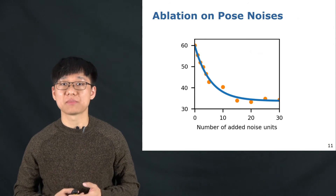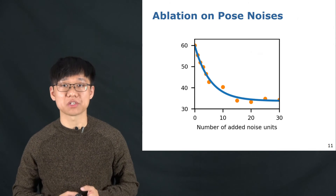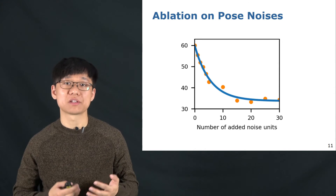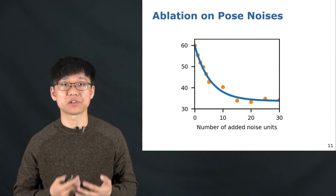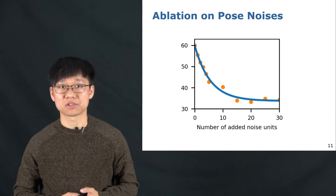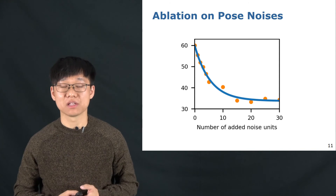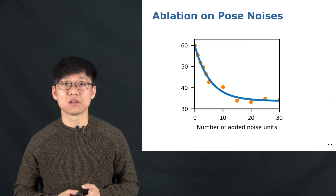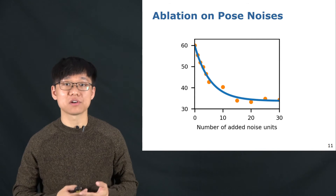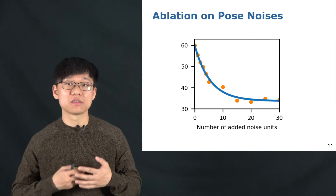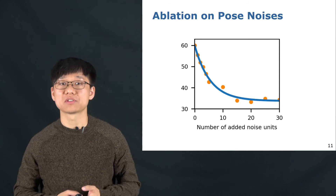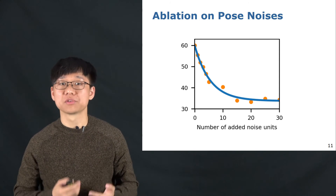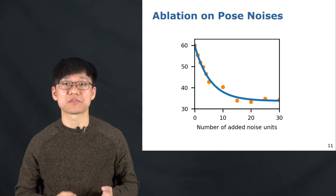This figure shows an ablation study on the moving object segmentation performance versus the amount of noise added to the relative odometry poses used to generate the residual images. As can be seen, the moving object segmentation performance will drop due to the noise. However, when the added noise gets larger, the performance will not become worse, which means the network may ignore the noisy residual images after a certain degree.